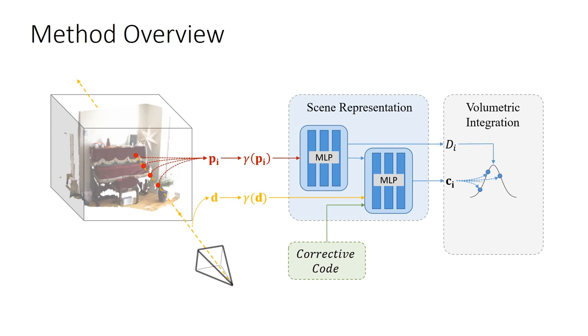Using the predicted signed distance, weights are computed for each sample. Finally, a single RGB value can be computed for the ray as a weighted sum of the sample colors.